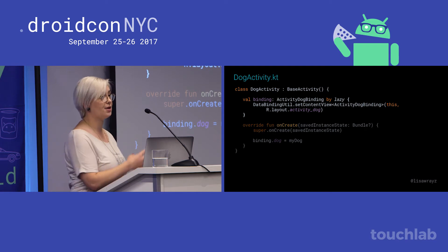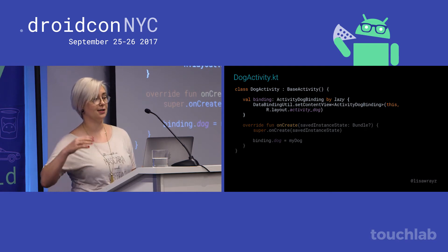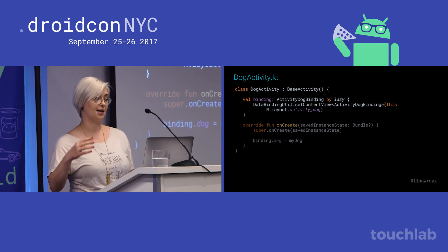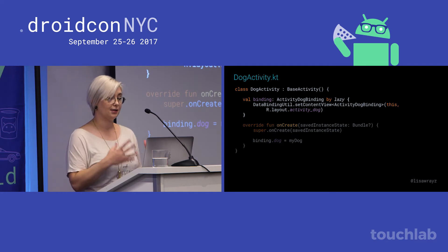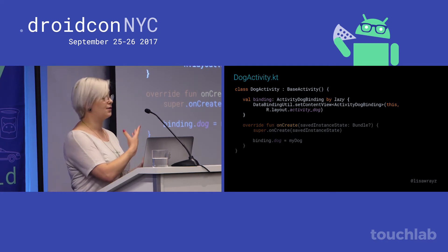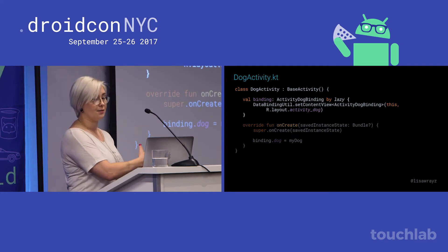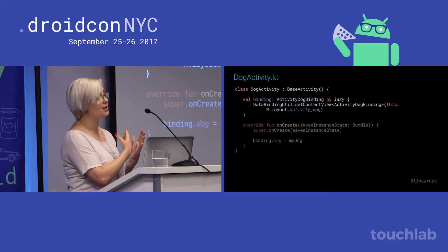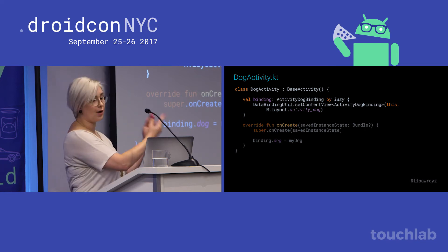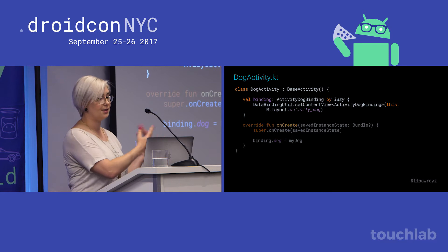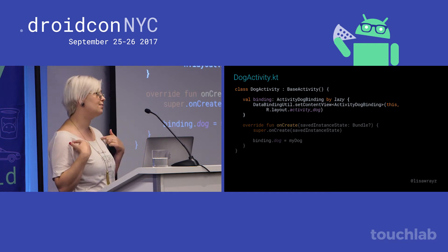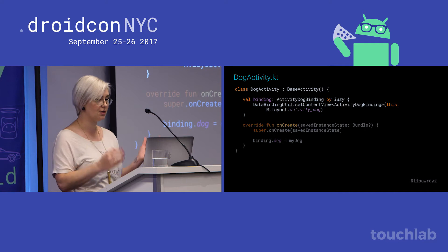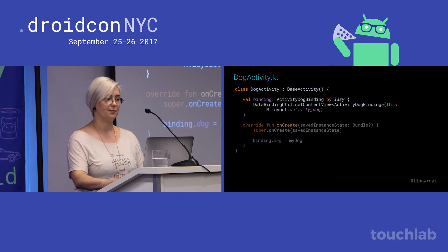We can go even further and use lazy. Kotlin's property delegation lets me say I'm delegating the setting and getting of this property to another class — in this case that's lazy. What it does is wait until the first time it's called, here in onCreate, execute this code once, and save the value. So exactly what we were doing ourselves with var, but now it's also immutable. Best of all worlds.